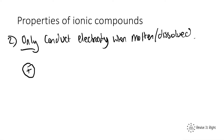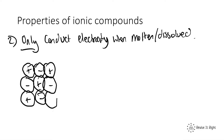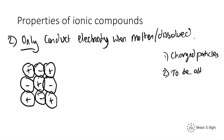Let's draw our giant ionic lattice structure. For electricity to be transferred through a material, you need two things: charged particles within the material — materials with no charge do not conduct electricity — and those charged particles must be able to move to carry the charge. In our solid ionic compound, does it have charged particles? Yes, it has positive and negatively charged particles.